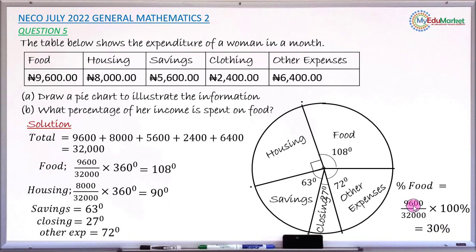Alternatively, you can take the angle for food (108 degrees) divided by total angle (360), then multiply by 100%, which gives the same result of 30%. Both methods are acceptable and answer all two questions.